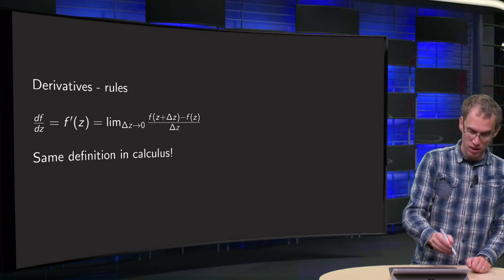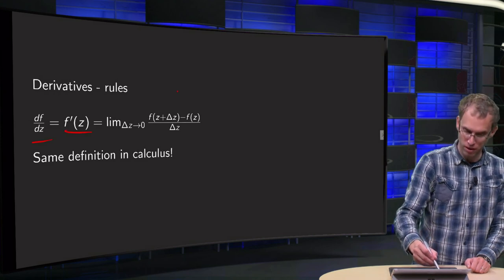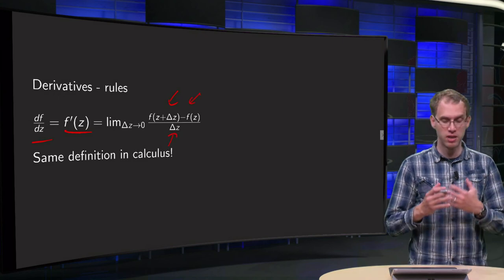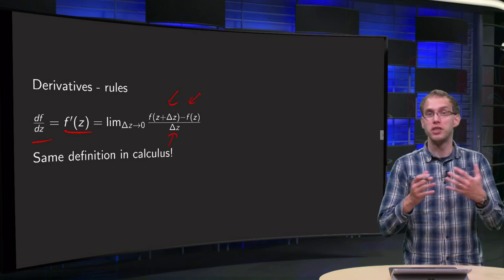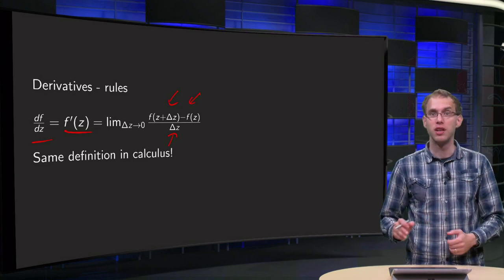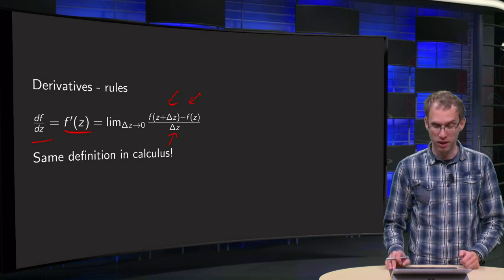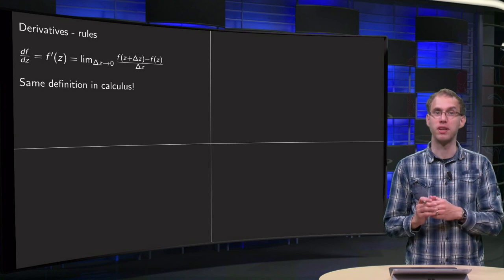As we say, df/dz = f'(z) = lim(Δz→0) [f(z+Δz) - f(z)]/Δz. So that is the same or similar definition as in calculus, which means that we can use similar rules because the proofs of those rules are in the same way as we prove them in calculus.